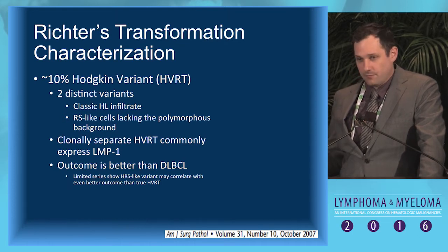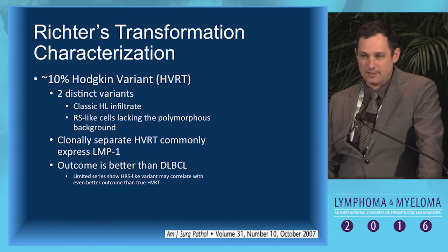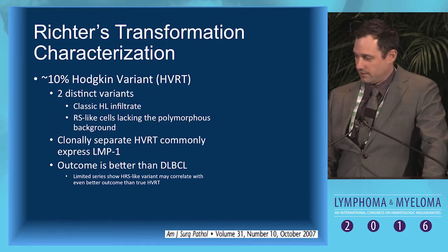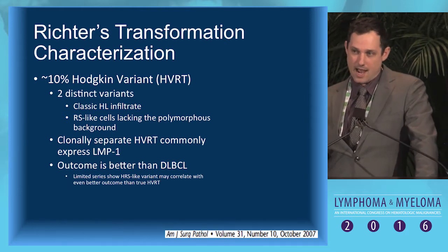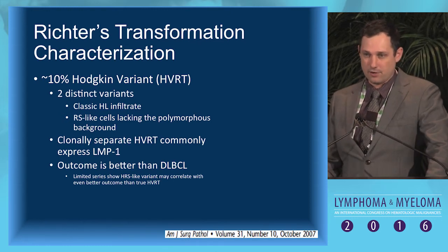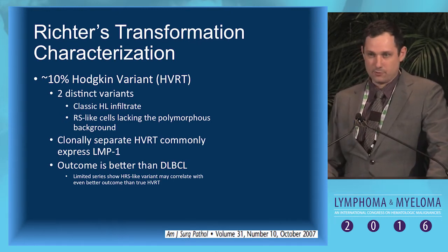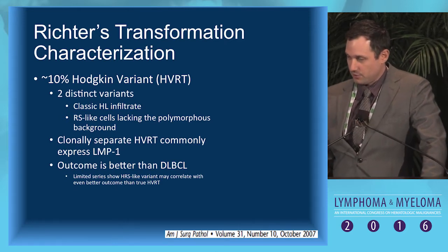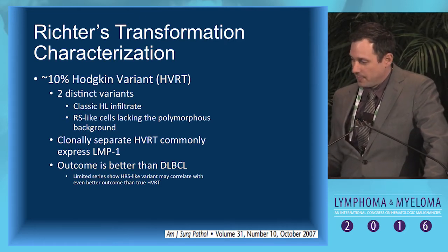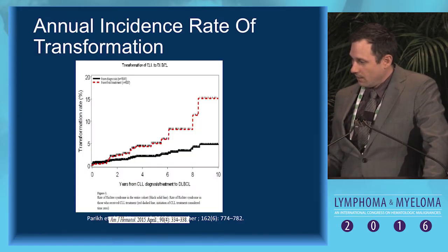The outcome for Hodgkin transformations is better than the DLBCL variant, but not as good as de novo Hodgkin lymphoma. We typically use the same regimens — ABVD and similar — as in classical Hodgkin's lymphoma, with good response rates, but survivals are slightly different.